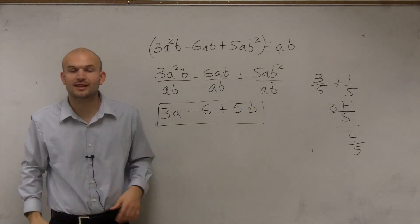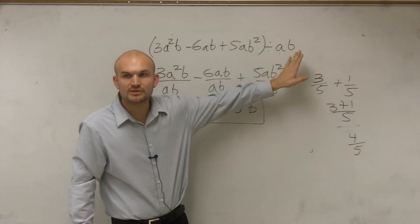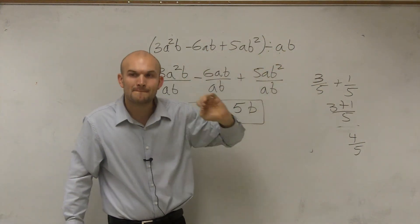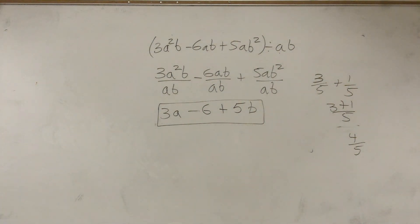So if you have a polynomial divided by a monomial, you can simply divide each term by your monomial. That's the first one. Oh, there's more? That would be more.